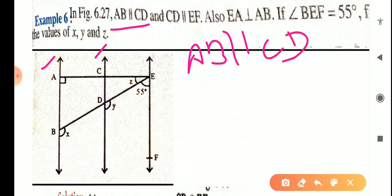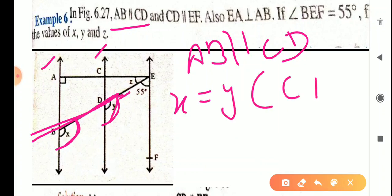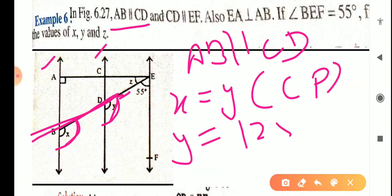Now you take the two lines AB parallel to CD — it is given in the question. When AB and CD are parallel and BD is the transversal, X and Y are on the same position, so they are corresponding angles. Therefore X equals Y. Since Y equals 125 degrees, X also equals 125 degrees. So we have found the values of X and Y.